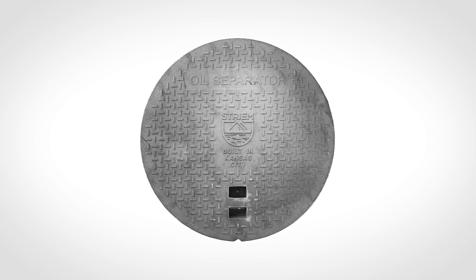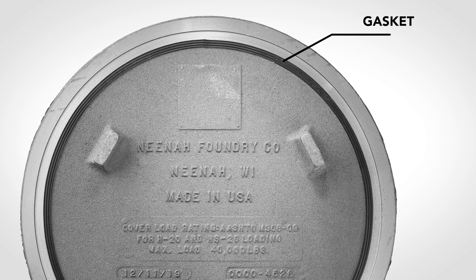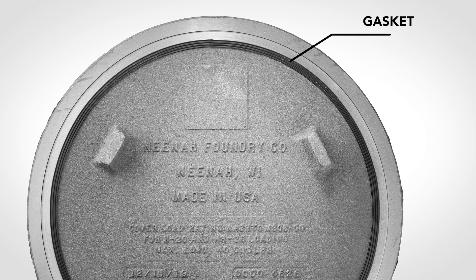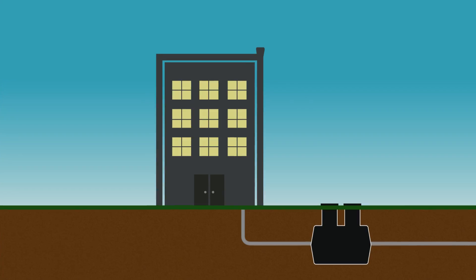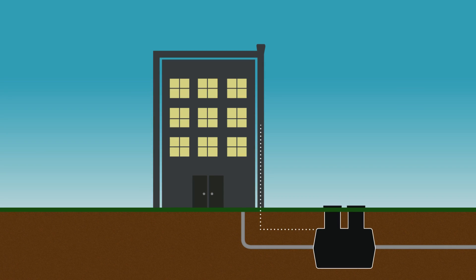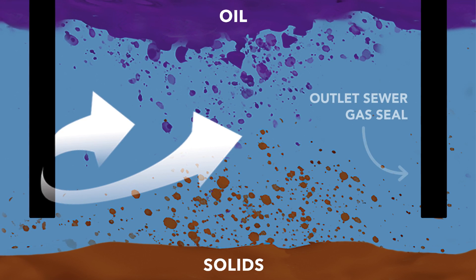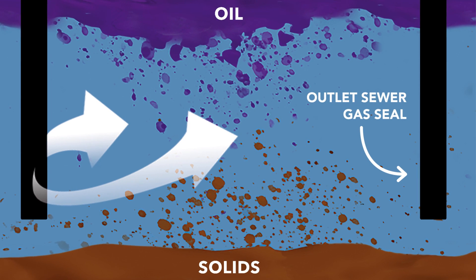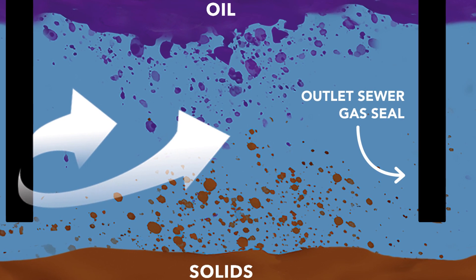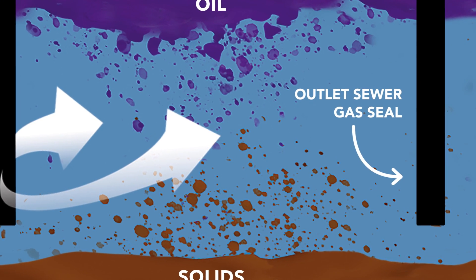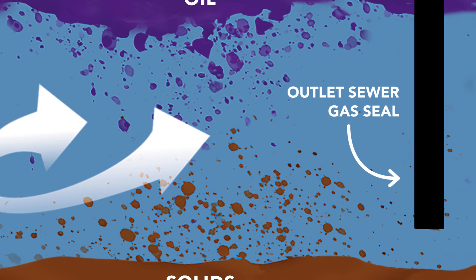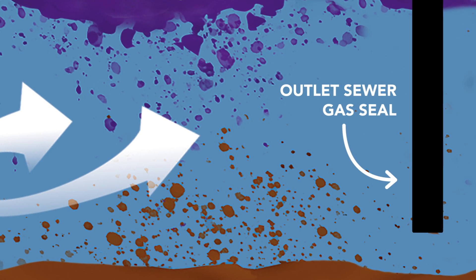Oil separators can be designed many different ways, but should follow these general requirements. The manhole should have a gasketed cover with the correct load rating. Because the contents of the tank are flammable, the separator should have a vent connection to independently vent the tank to atmosphere. The tank should contain an outlet sewer gas seal acceptable by the local jurisdiction. This is to prevent sewer gases from entering the tank, and it also prevents floating oil from exiting the tank.